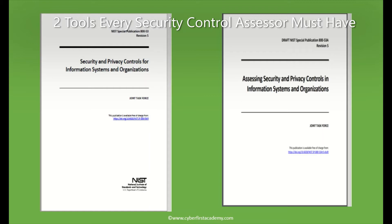One is NIST 800-53A and the other is NIST 800-53. NIST 800-53 talks about security and privacy controls for information systems and organizations, while NIST 800-53A talks about assessing security and privacy controls in information systems and organizations.